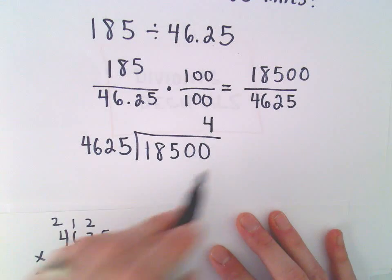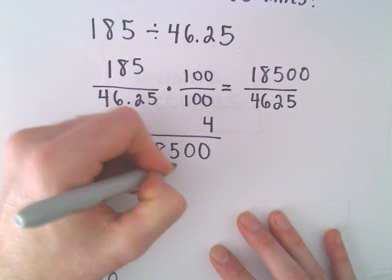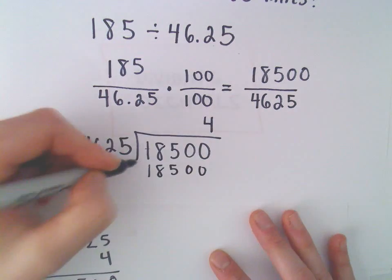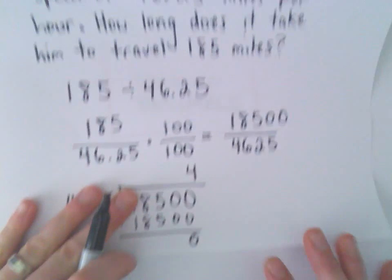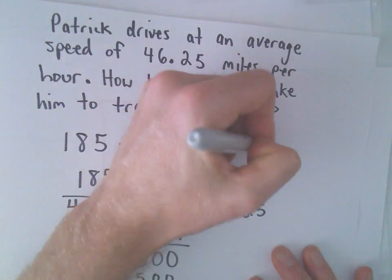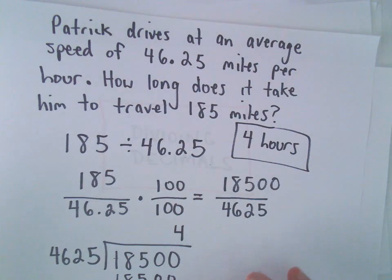So things were set up nicely for us. Again, 4 times 46.25 will leave us with 18500 exactly. If we subtract, we've got no remainder. So it says it'll take good old Patrick, that wonderful guy, it'll take him 4 hours to make that, to travel that distance.